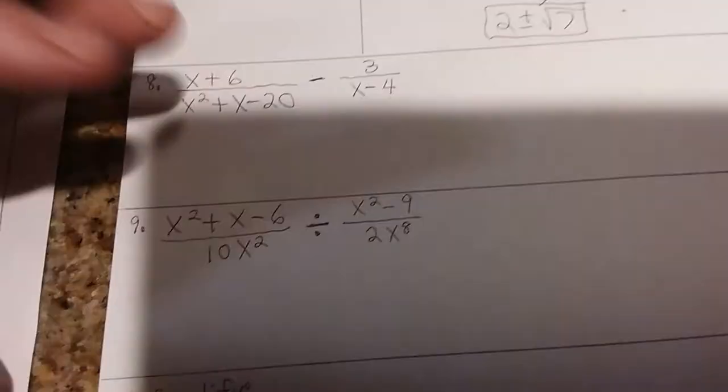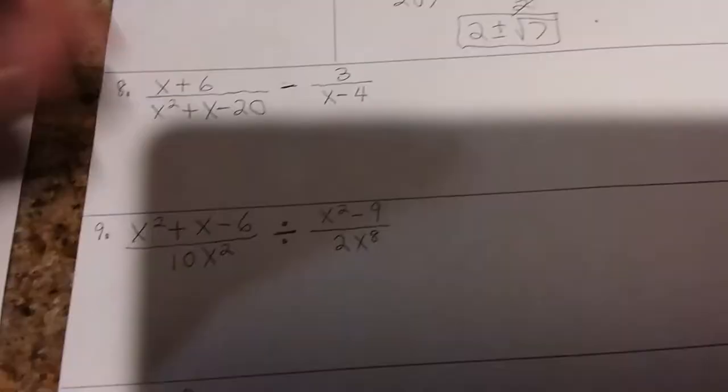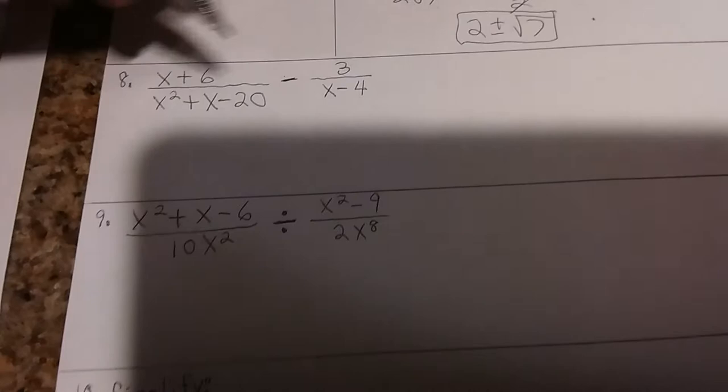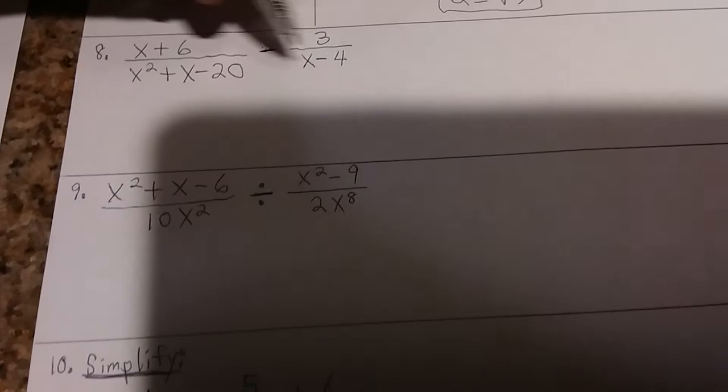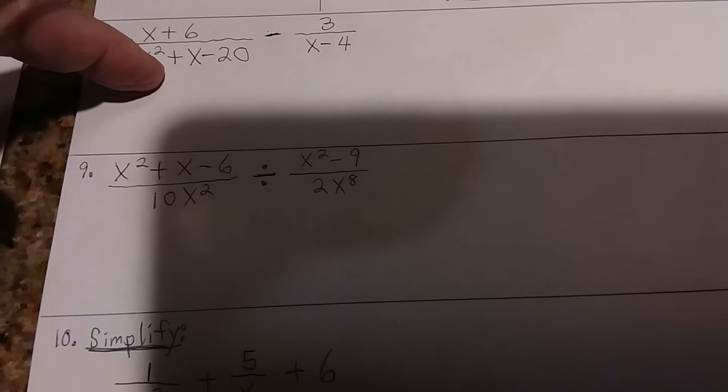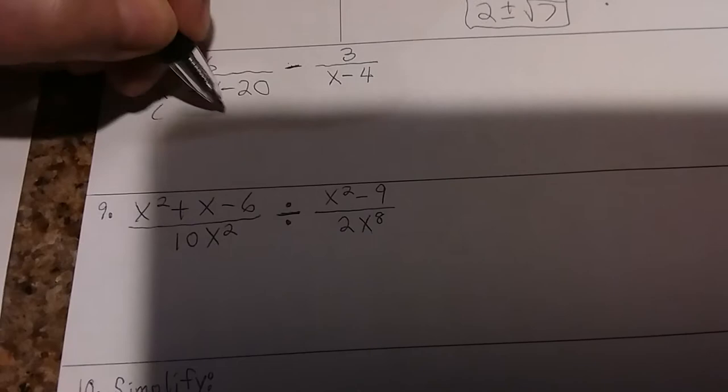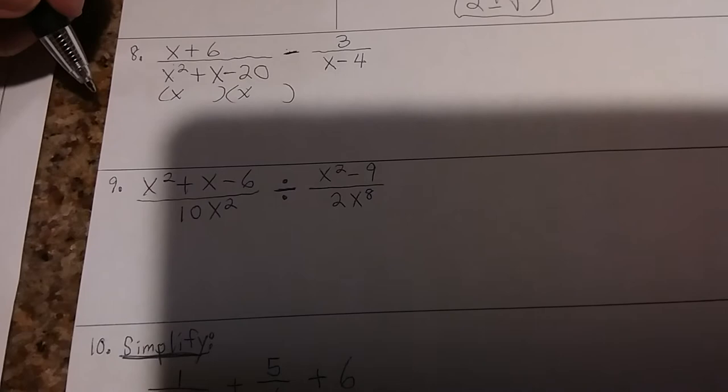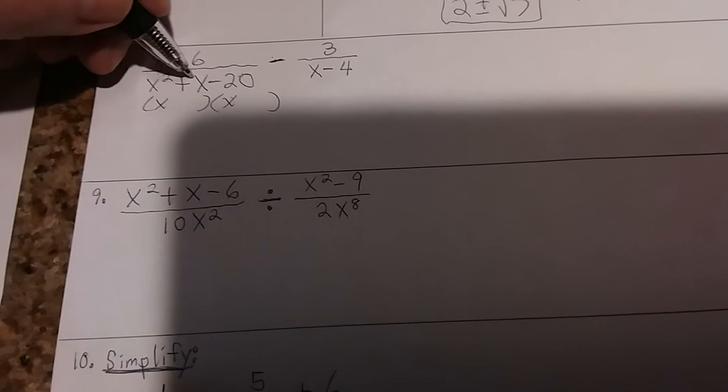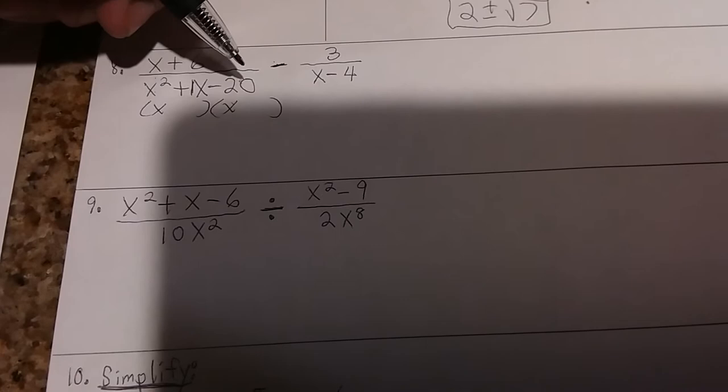Now we're going to get to fraction problems. And pay close attention here because each one is a little different. This one is subtracting. When you subtract or add fractions, you've got to get the least common denominator. And in order to do that, if you see something that could be factored in the denominator, do that first. This part right here, it's a trinomial, and we're going to factor it. Everyone knows x times x is x squared. Now you've got to find two numbers that multiply to give you the last number, and add or subtract to give you the middle number, which is a 1. Isn't 4 times 5, 20? And isn't 5 take away 4, 1? So 5 and 4 work.